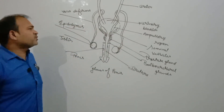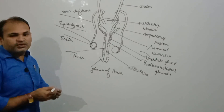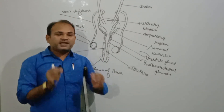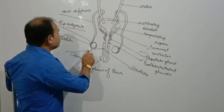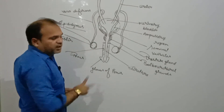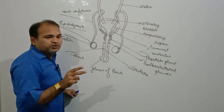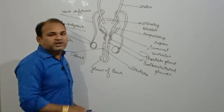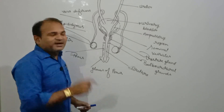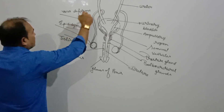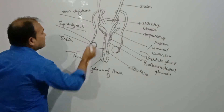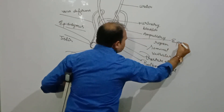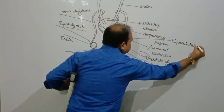यह complete diagram of male reproductive system है। इसमें organs include हैं: first — one pair of testes, जो abdominal cavity के बाहर pelvic region में scrotum के अंदर protect होते हैं। Testes के ऊपर से epididymis arising करती है, जो super coiled structure है, जिसकी length 6 to 7 meter होती है और जिसके 3 parts हैं। Epididymis से आगे vas deferens निकलती है, जो swollen होकर ampullary region बनाती है और finally ejaculatory duct में open होती है।